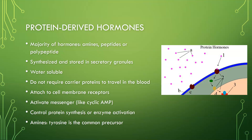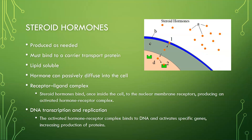Again, for the amines, tyrosine is a common precursor. Then you have your steroid hormones — they are produced as needed. They must bind to a carrier transport protein because they are made from cholesterol, so they're lipid-soluble. Therefore, they don't dissolve in blood and they have to have protein to be transported in blood.